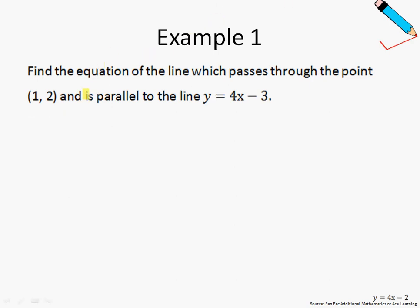In example number one, find the equation of the line which passes through the point (1, 2) and is parallel to the line y equals 4x minus 3. Before we move any further, let us just recall that the equation of any straight line can always be written in this general form, y equals mx plus c.